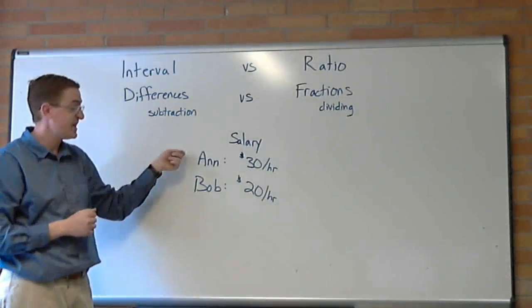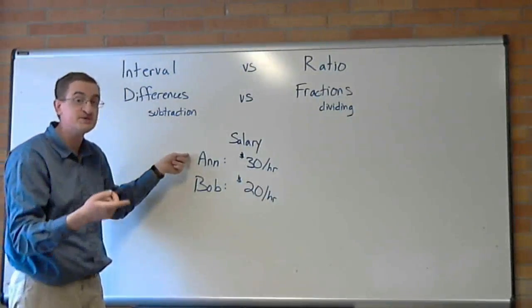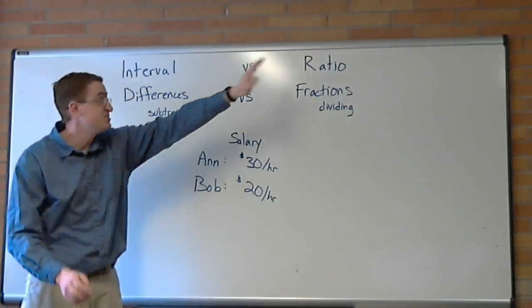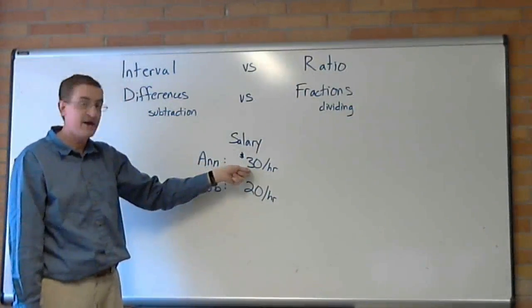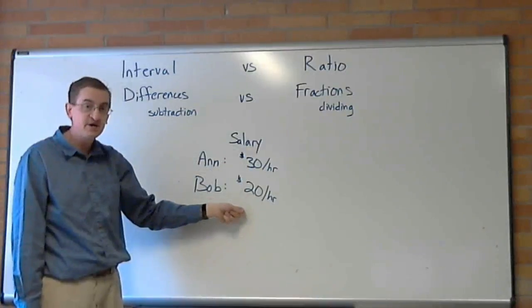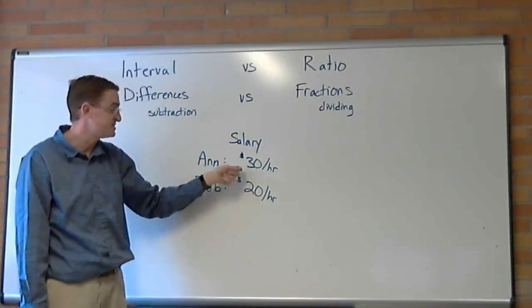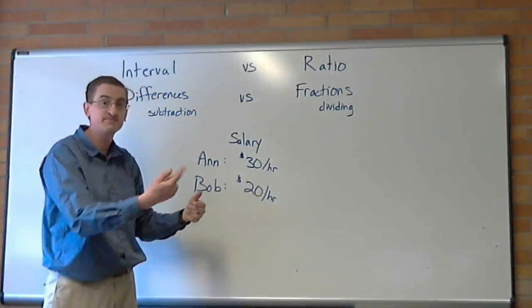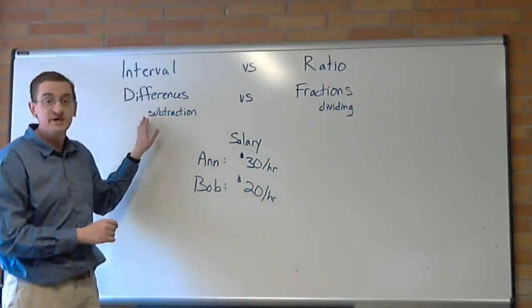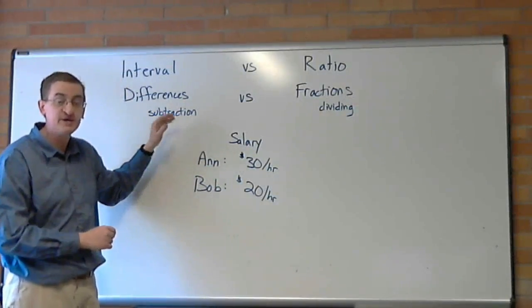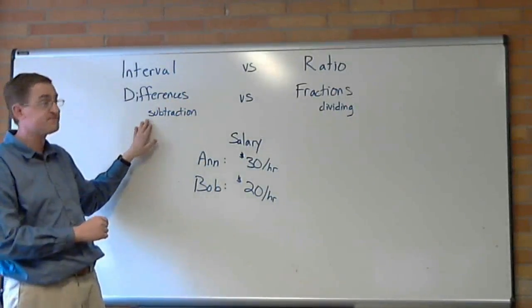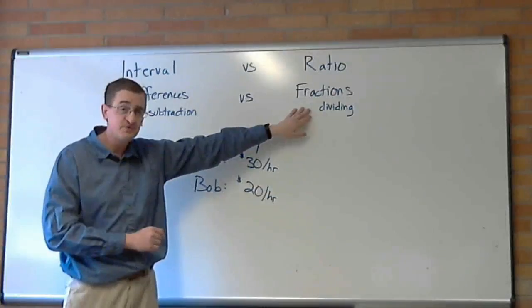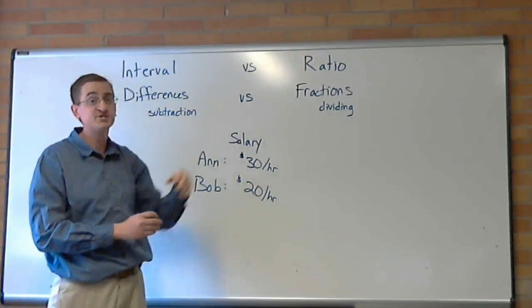On the other hand, if you said Ann is earning 50% more than Bob, that means you think of salary as ratio data. Because Ann is getting $10 more, 10 is half of what Bob's getting, so she's getting half of what Bob's getting more. So you can have one variable salary, and two people might give you different answers. One person says, I think of it as interval data, I want to take differences. Someone else says, I think of it as ratio data, I want to take fractions.